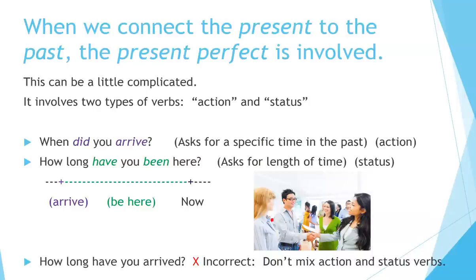When we connect the present to the past, the present perfect is involved. This can be a little complicated — it involves two types of verbs: action and status. For example, when did you arrive? This asks for a specific time in the past and is talking about a specific action. How long have you been here? This asks for a length of time and is talking about status — something that has existed over a long period of time. You can see on the timeline how we separate the action from the status, which exists for a long period of time.